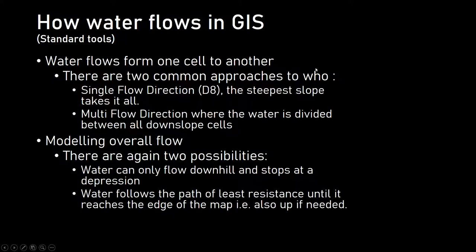In GIS, we have two issues we have to look at. First, how water flows from one cell to its neighbors. There are two approaches. One is what we call a single flow, or D8, where water flows from a cell to one of its eight neighbors — specifically the one where it has the steepest slope.